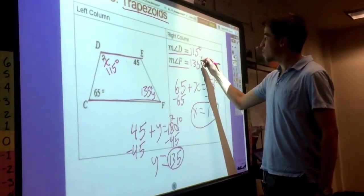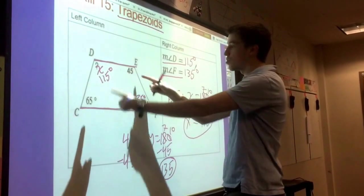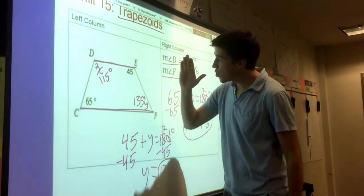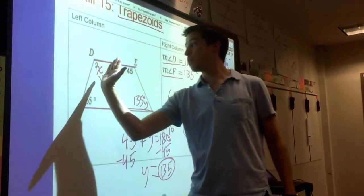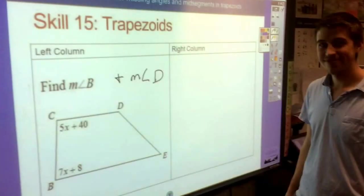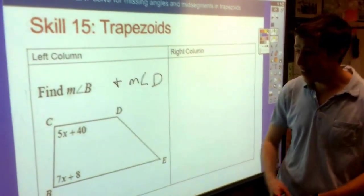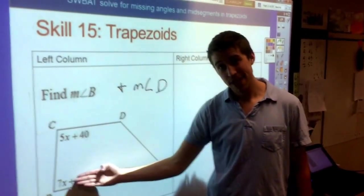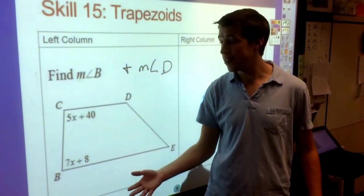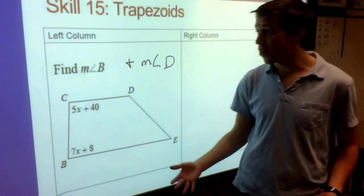So you see that in trapezoids, opposite angles are no longer the same. We just know that these adjacent angles between the bases are supplementary. All right, and as usual guys, it's algebra time, because we got to make it a little more complicated, so we know how to set up equations to solve for X.